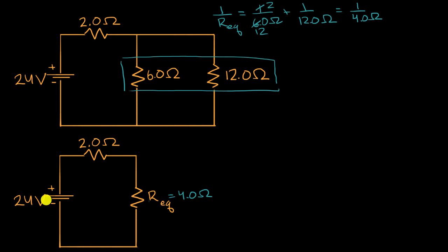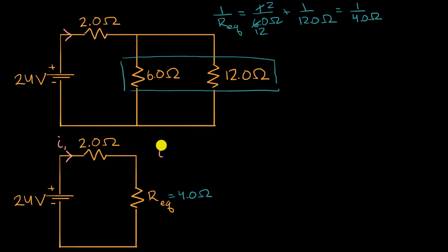The next thing we could do is figure out what the current is through this part of the circuit — we can call that I sub one. We can use Ohm's law for that: I sub one would be equal to our voltage drop of 24 volts divided by the equivalent resistance of these two resistors in series.